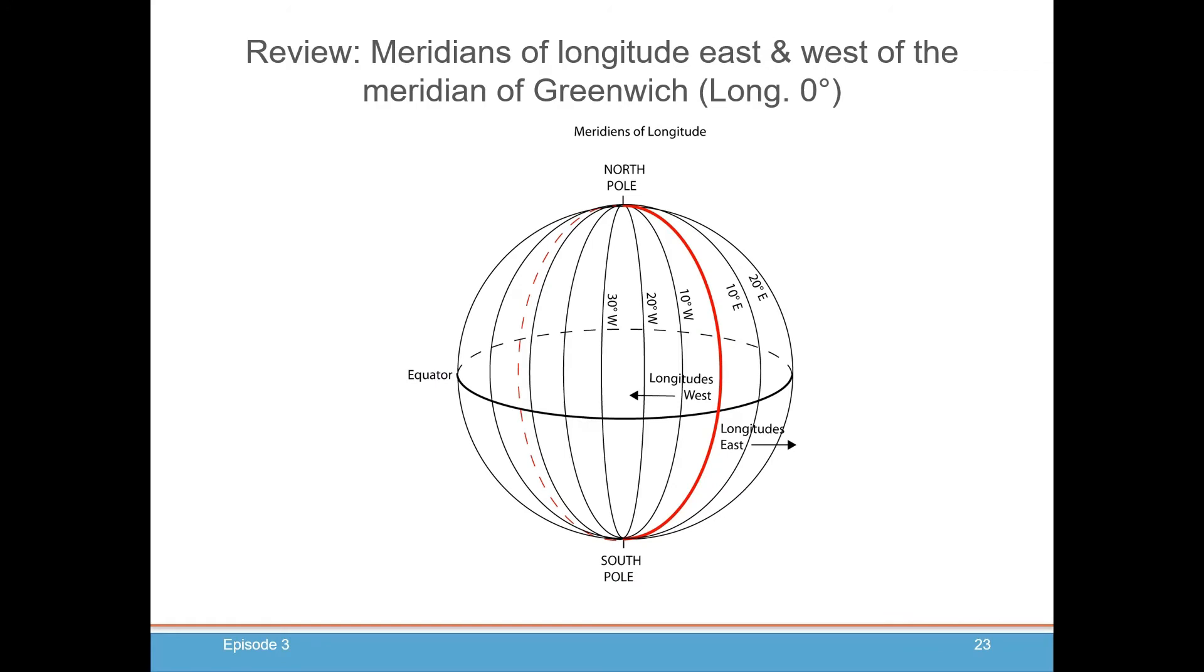We also need to know how to go east and west. The meridians of longitude are measured from the Greenwich meridian, which goes through the Greenwich Observatory in England. They're labeled going west and going east. To find out where you are, you need both your latitude and longitude, which gives you a precise location on earth.